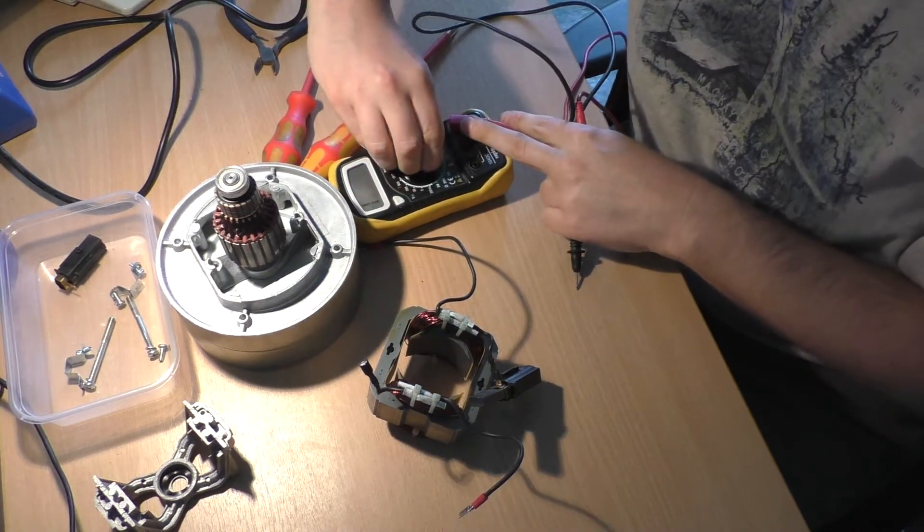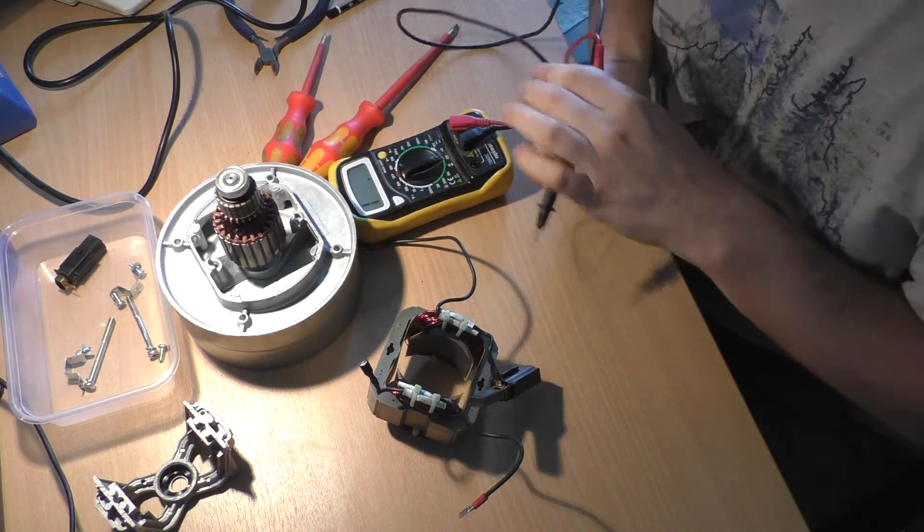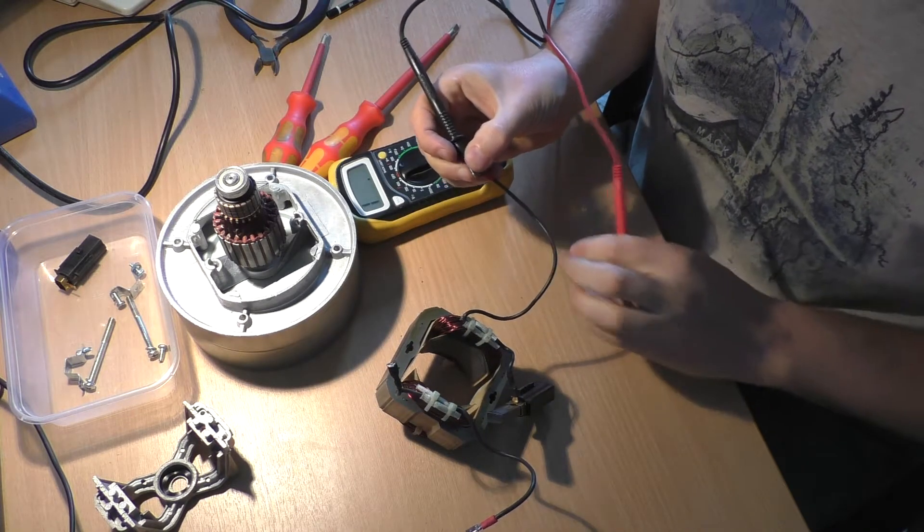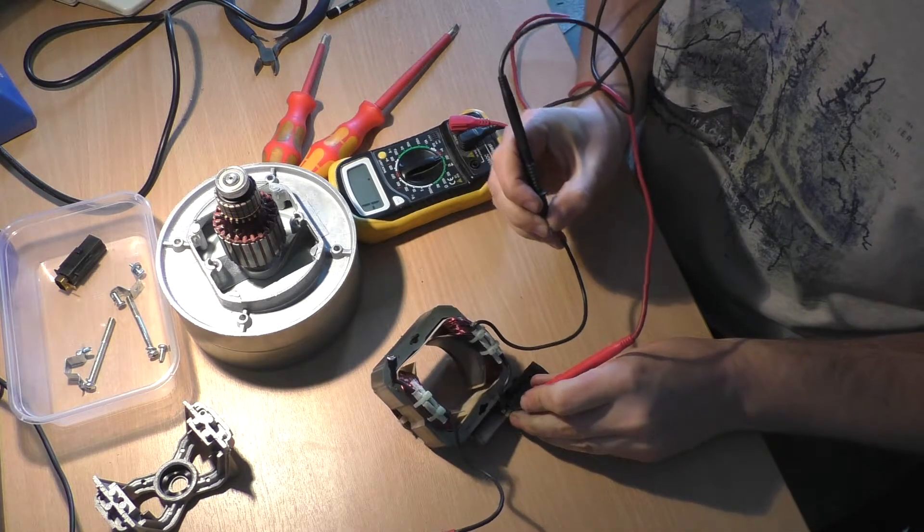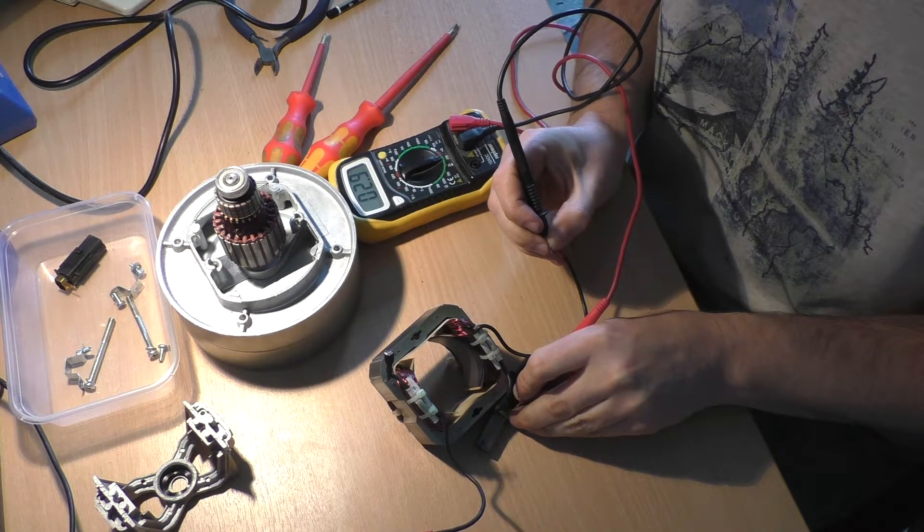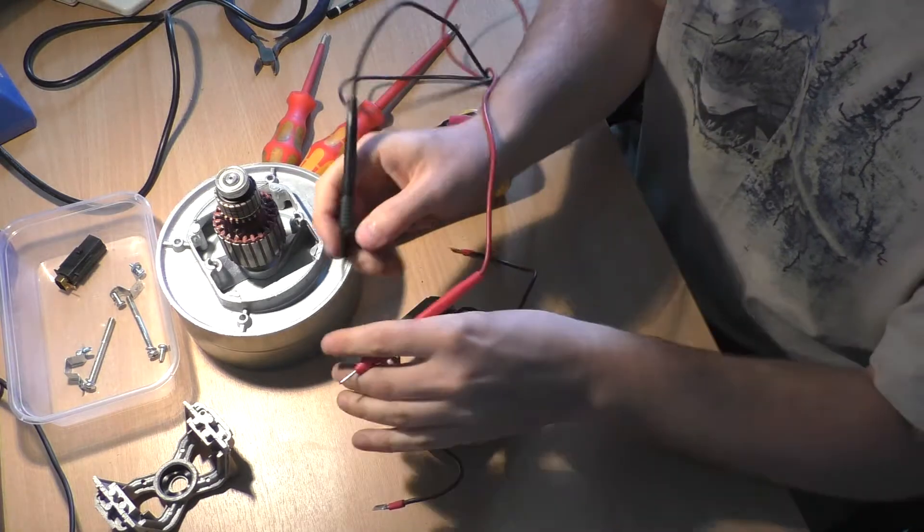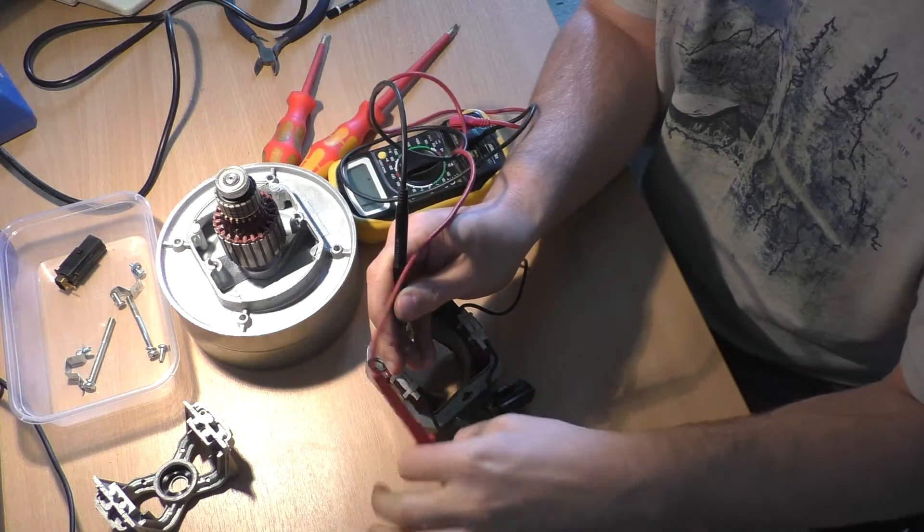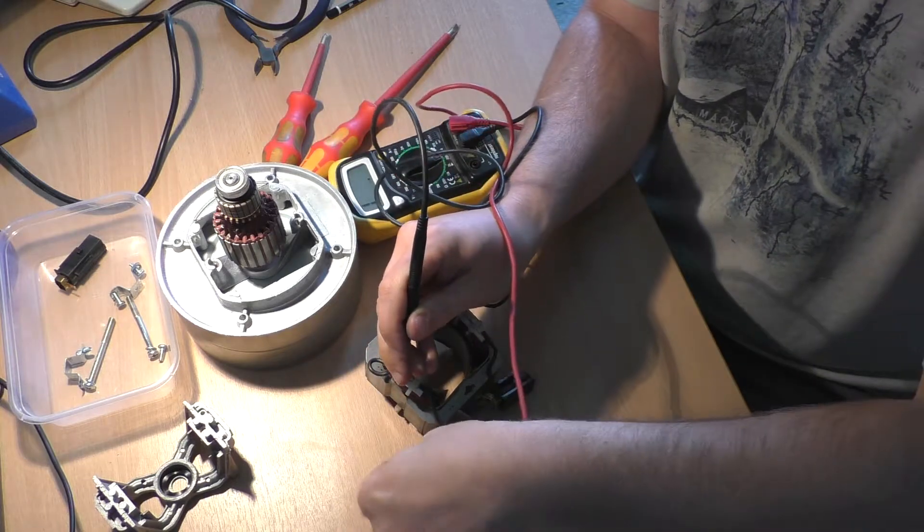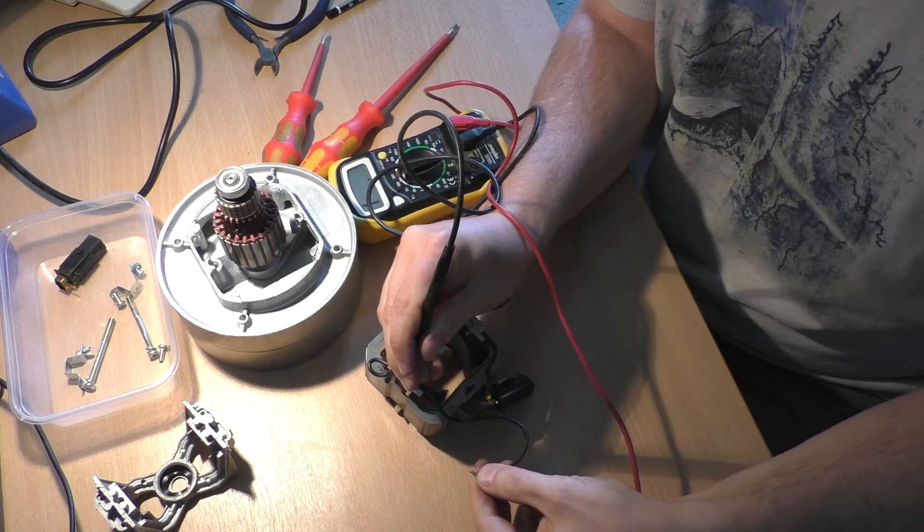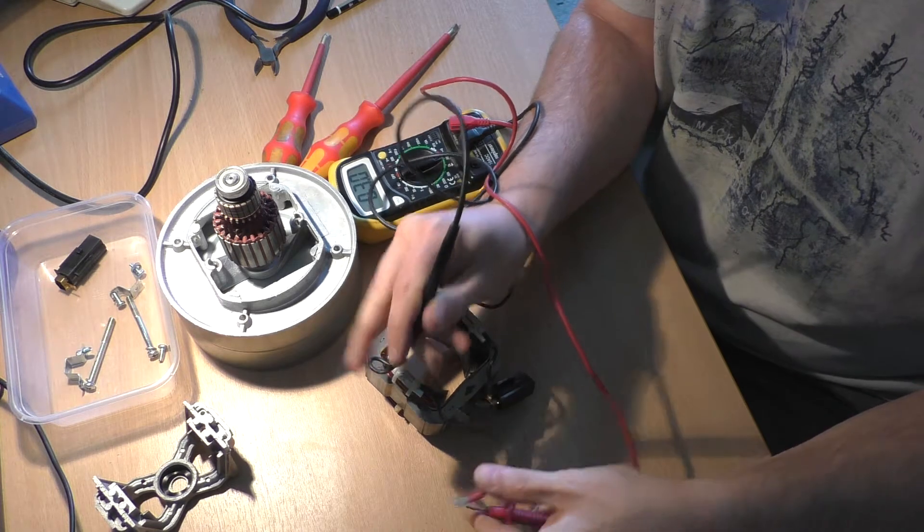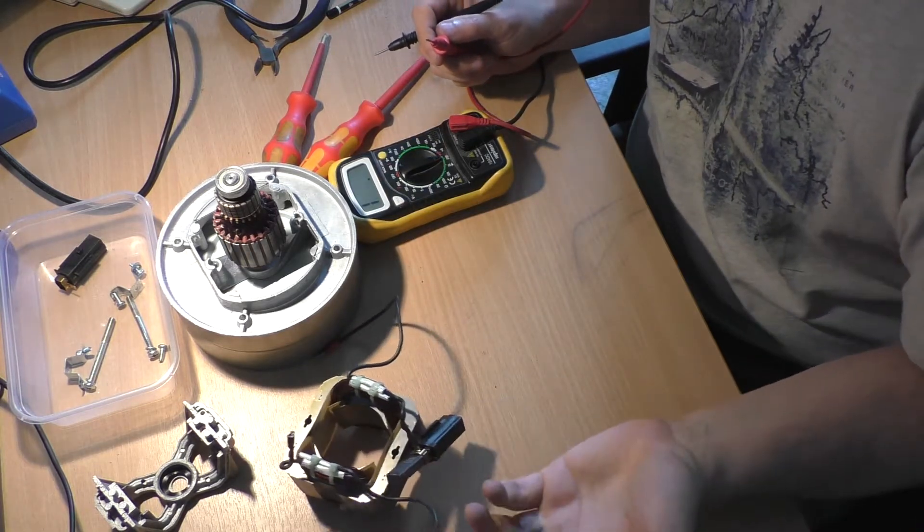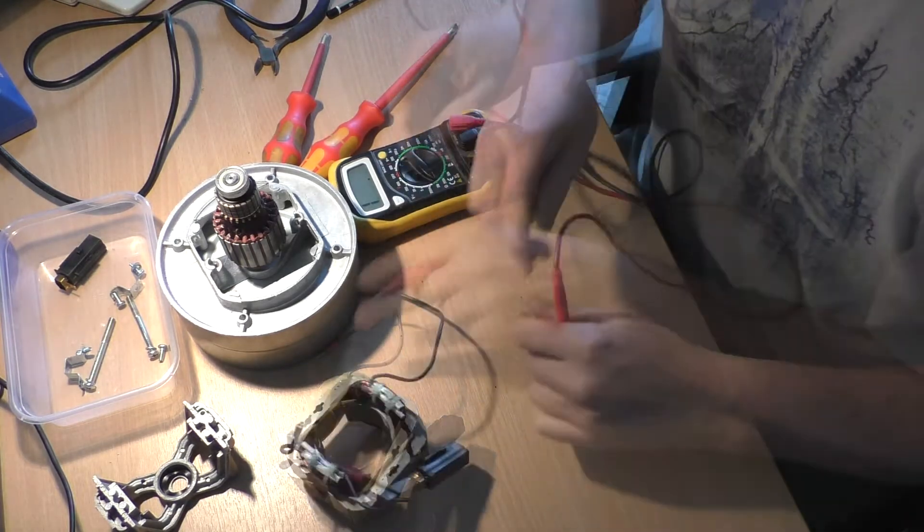And everything should measure in the sort of few ohms range. So that is 2.9 ohms. About right. It's 3.0. So I mean what that's saying is those windings they're okay. So there's nothing there.